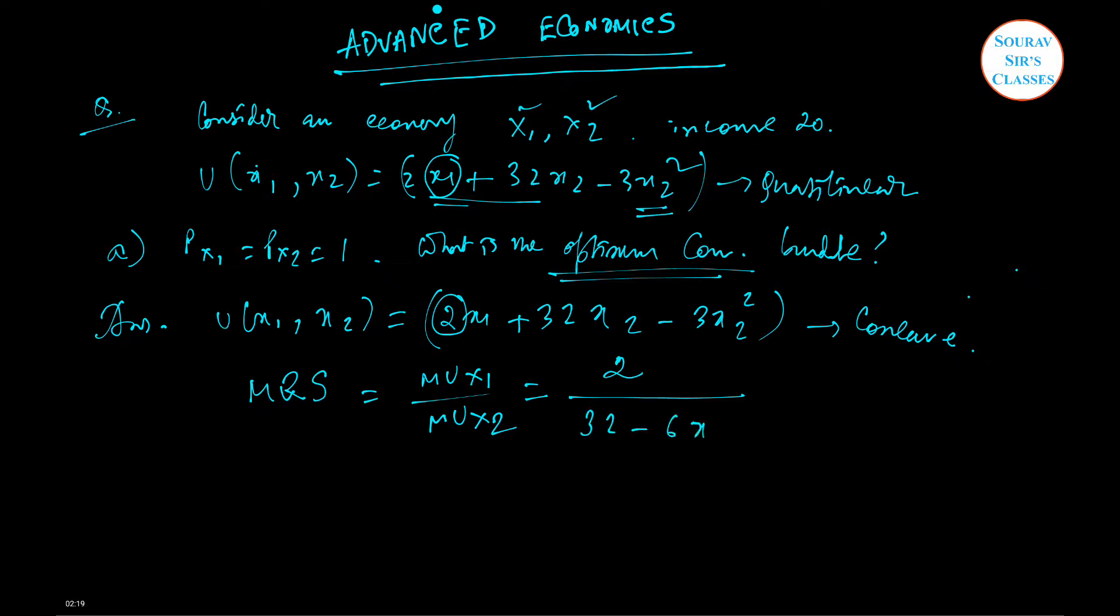This is 2, and this part is 32 minus 6x2, so we are now ending up with the MRS value. The budget line we have is x1 plus x2 equal to 20, because the prices are 1 each.